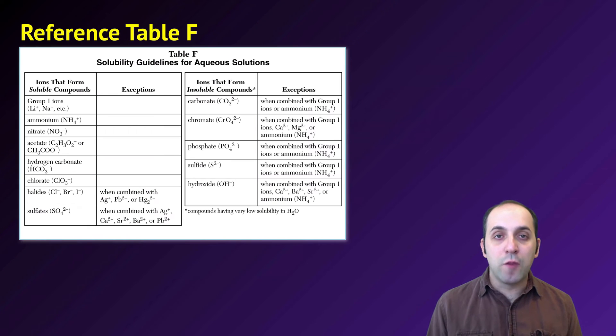So it's really important for the purpose of double replacement reactions to determine whether or not a particular compound is going to be soluble or insoluble. We have a reference table for that. It's reference table F, which are the solubility guidelines for aqueous solutions, solutions where water is the solvent. The left side of the column are ions that form soluble compounds, things that will dissolve in water, and the right side have ions that will form insoluble compounds, things that will not dissolve. Of course, there are some exceptions on both sides. So exceptions on the left side would make insoluble things, and exceptions on the right side will make soluble things.